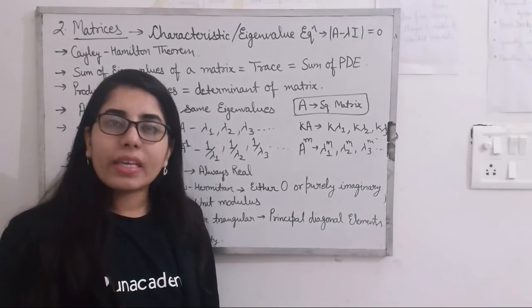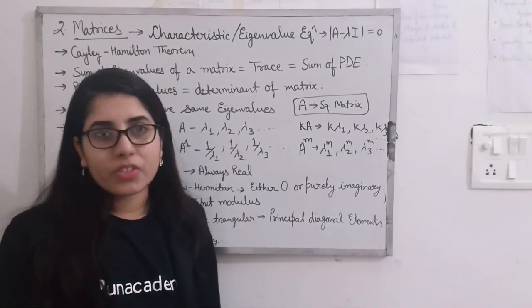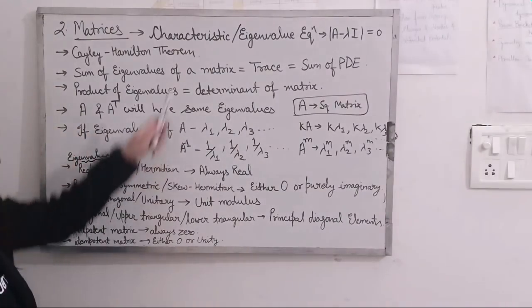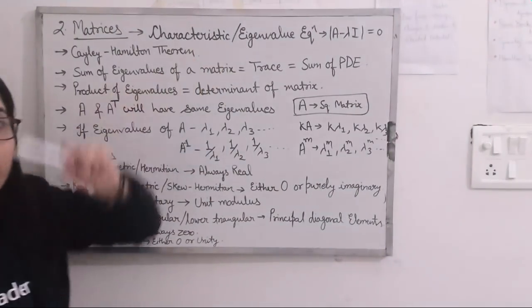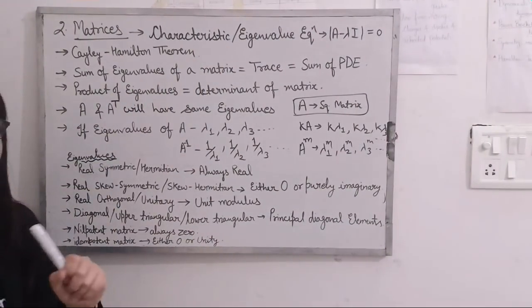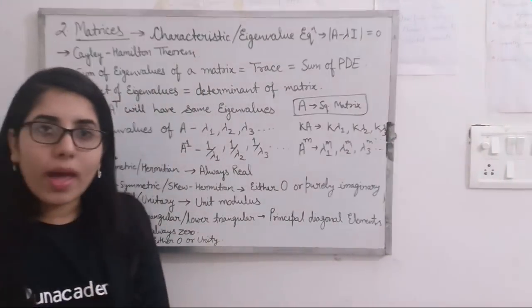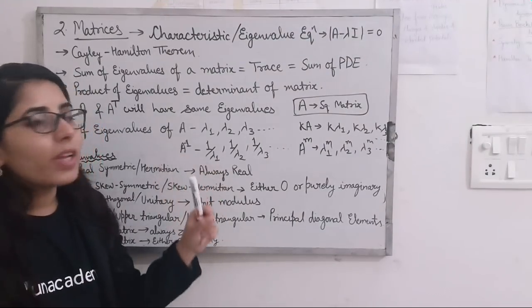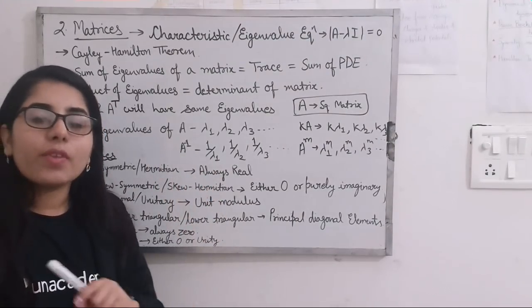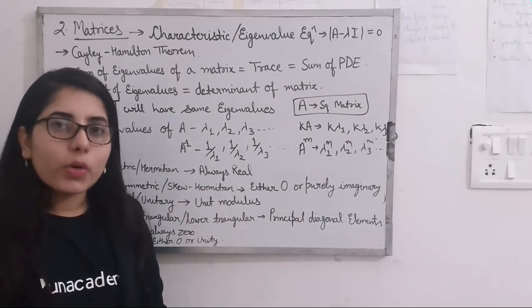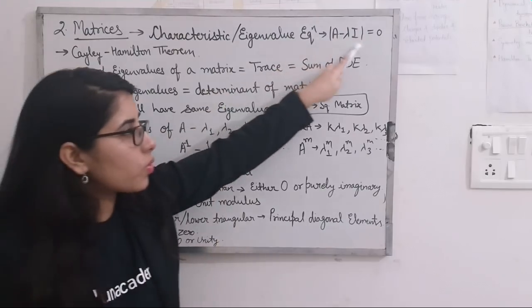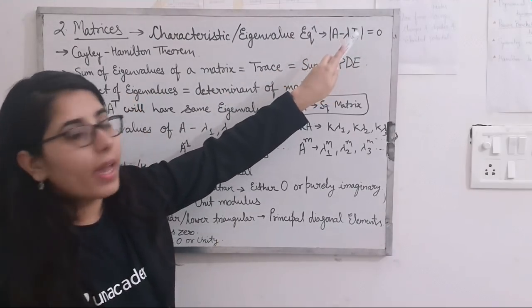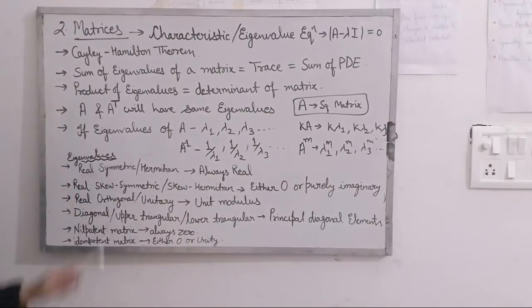So this is your characteristic or eigenvalue equation — mod of A minus lambda I is equal to zero — which you use whenever you need to find the eigenvalues of any given matrix.